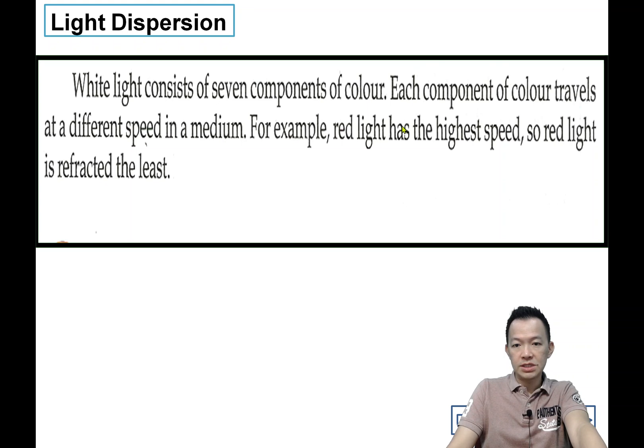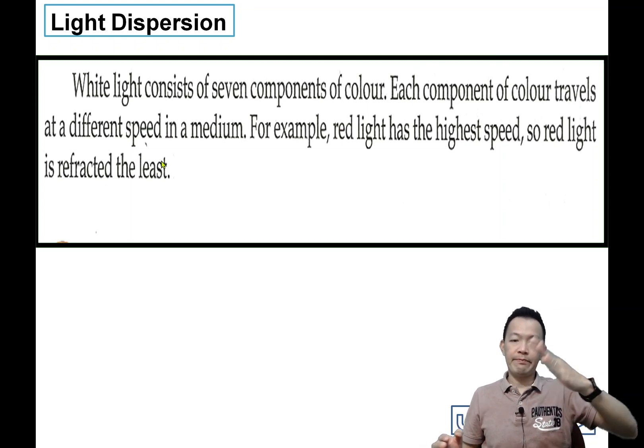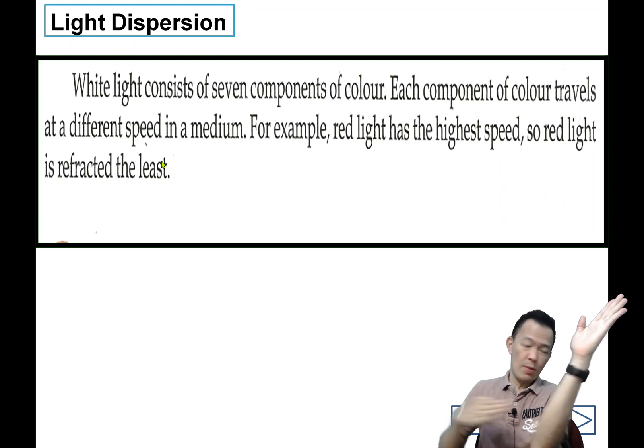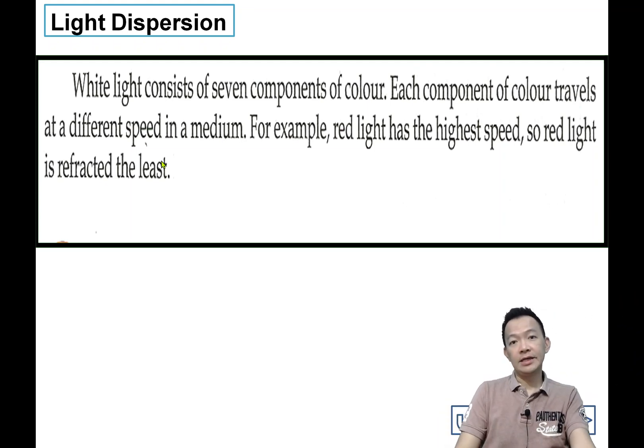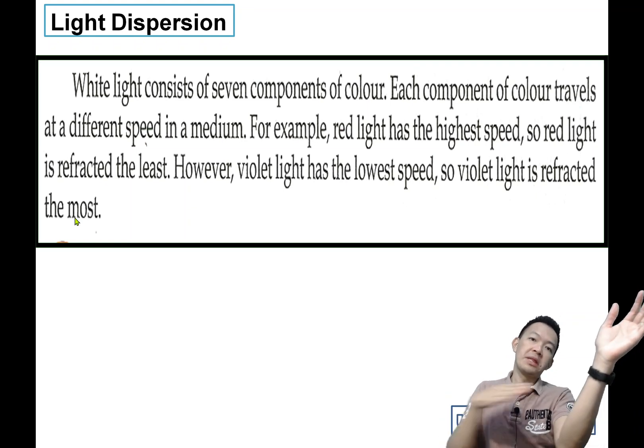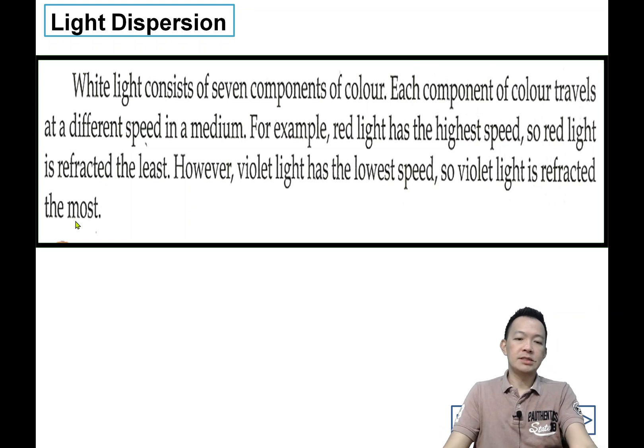For example, red light has a higher speed. Because the speed is high, it's deflected the least when it passes through the prism. However, violet light has a lower speed, so the violet light is deflected the most.